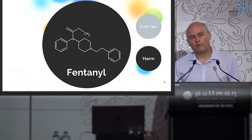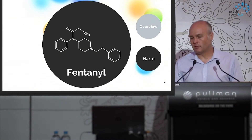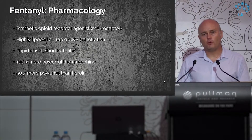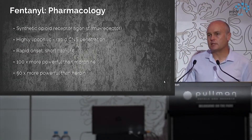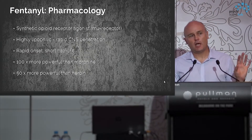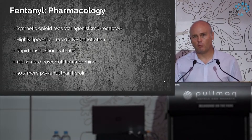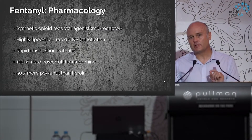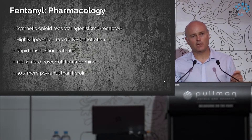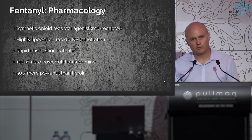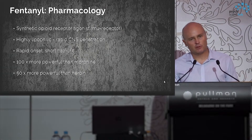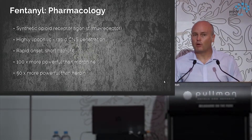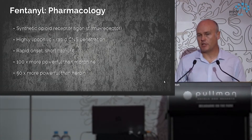Starting with a brief overview of fentanyl: it's a synthetic opioid agonist with a structure quite different from heroin and morphine, but it's a potent mu receptor agonist. That means it's a very good analgesic, but it also produces euphoria — which is one of the reasons it's misused — and quite potent respiratory depression.